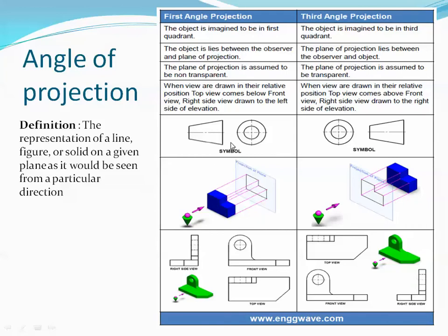The symbols used are based on a truncated cone. In first angle projection, if you see from the left side, the left side view is placed on the right side. In third angle projection, the right side view is placed on the right side itself.